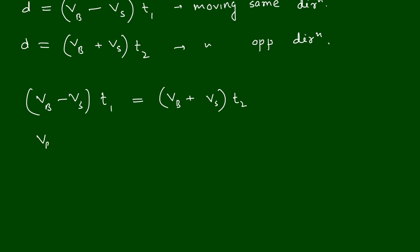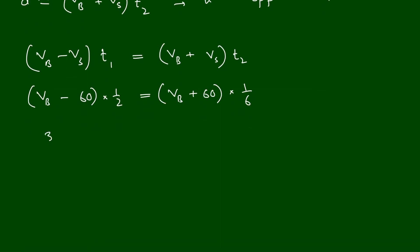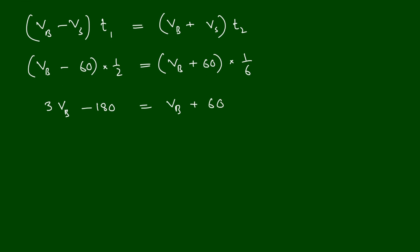Substituting vs = 60 km/h and t1 = 1/2 hour, and t2 = 1/6 hour: (vb minus 60) × 1/2 = (vb plus 60) × 1/6. Solving: 3vb minus 180 = vb plus 60, giving 2vb = 240, so vb = 120 km/h.